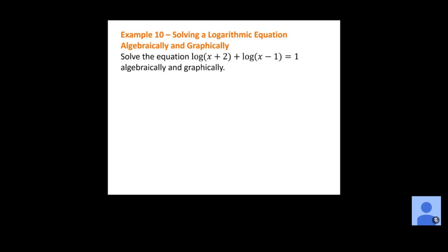Now we want to solve both algebraically and graphically. My first step, since I've got two different logs on the same side, is to combine them using the multiplication property: rewrite as the log of x plus 2 times x minus 1. Now I have a single log, so rewrite in exponential form. Since it's a common log with base 10: 10 to the first power equals x plus 2 times x minus 1.